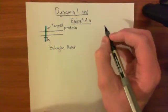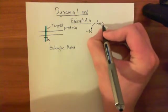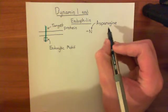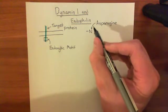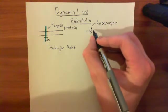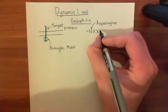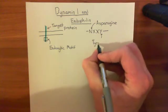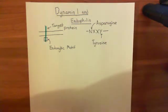What examples of endocytic motifs have we seen? Well, we've seen the sequence N — the single-letter amino acid code for asparagine, which is the primary amide of aspartic acid. After asparagine in this sequence, you can have anything (X), anything again, and then finally you have Y — the single-letter amino acid code for tyrosine. So asparagine-anything-anything-tyrosine (NXXY) is a very popular endocytic motif.